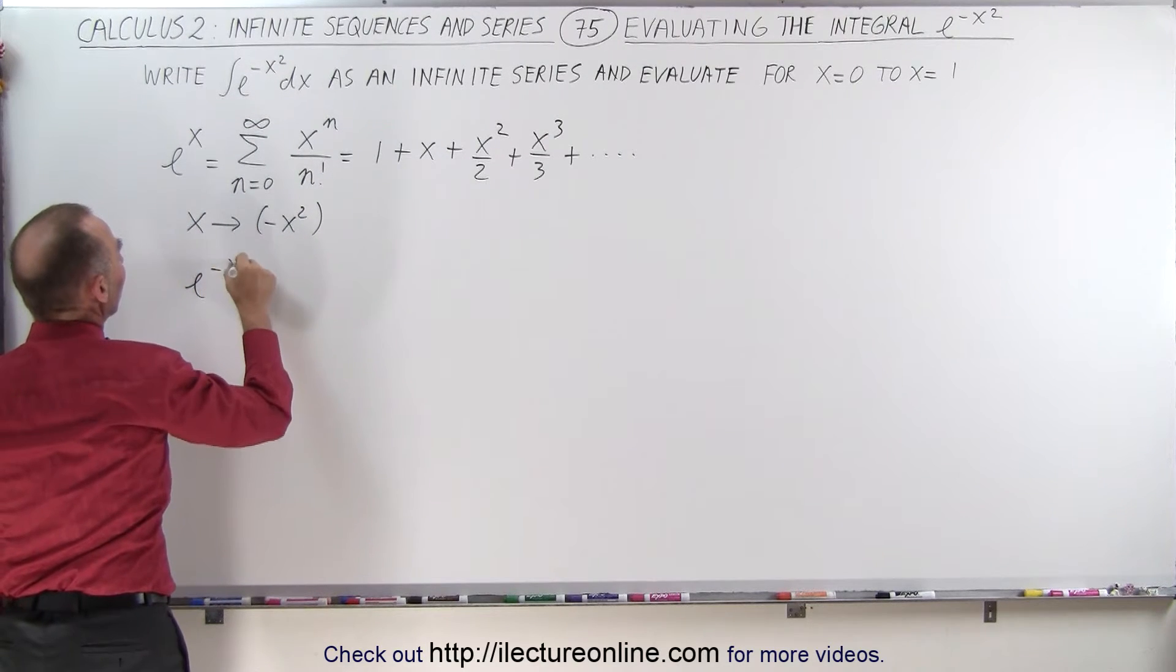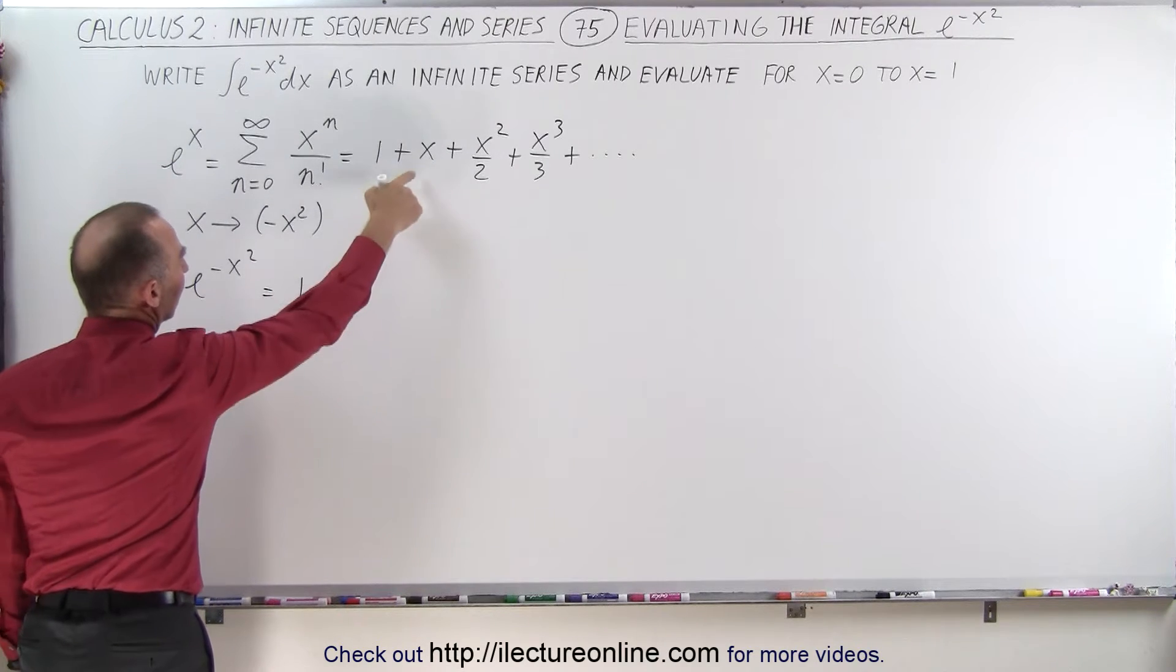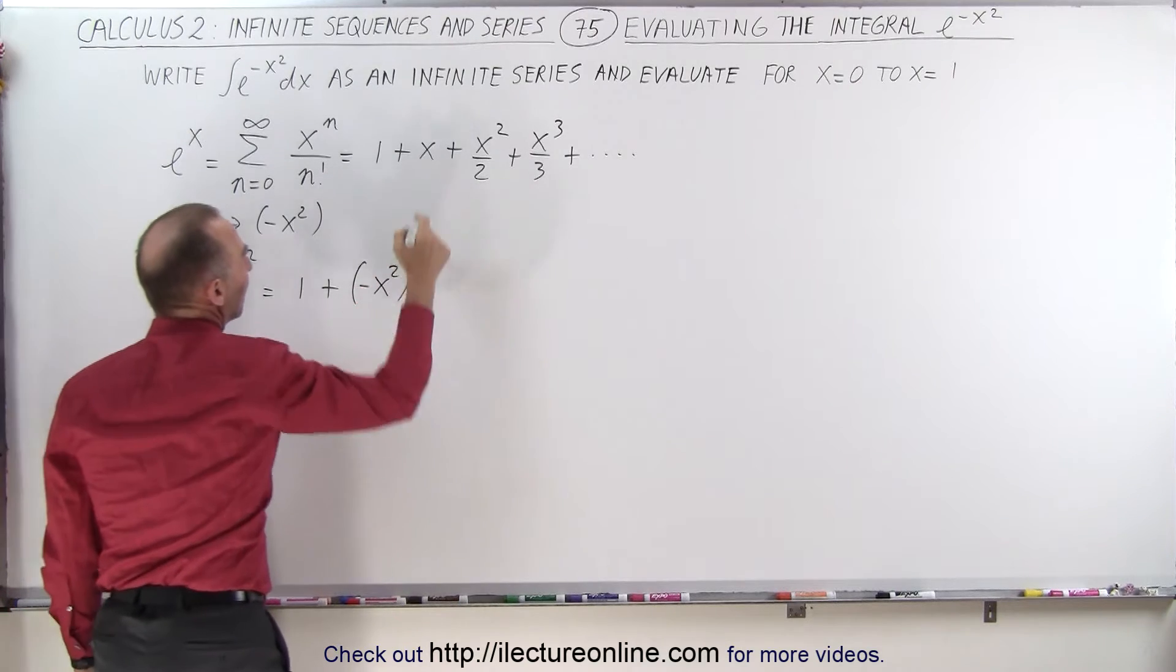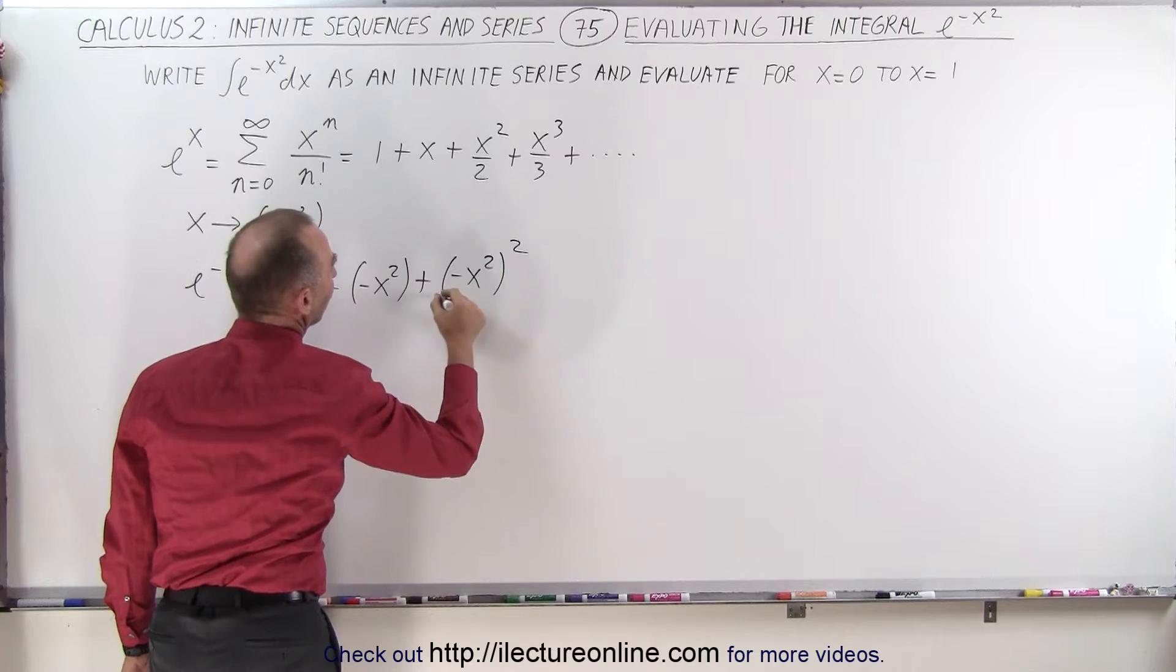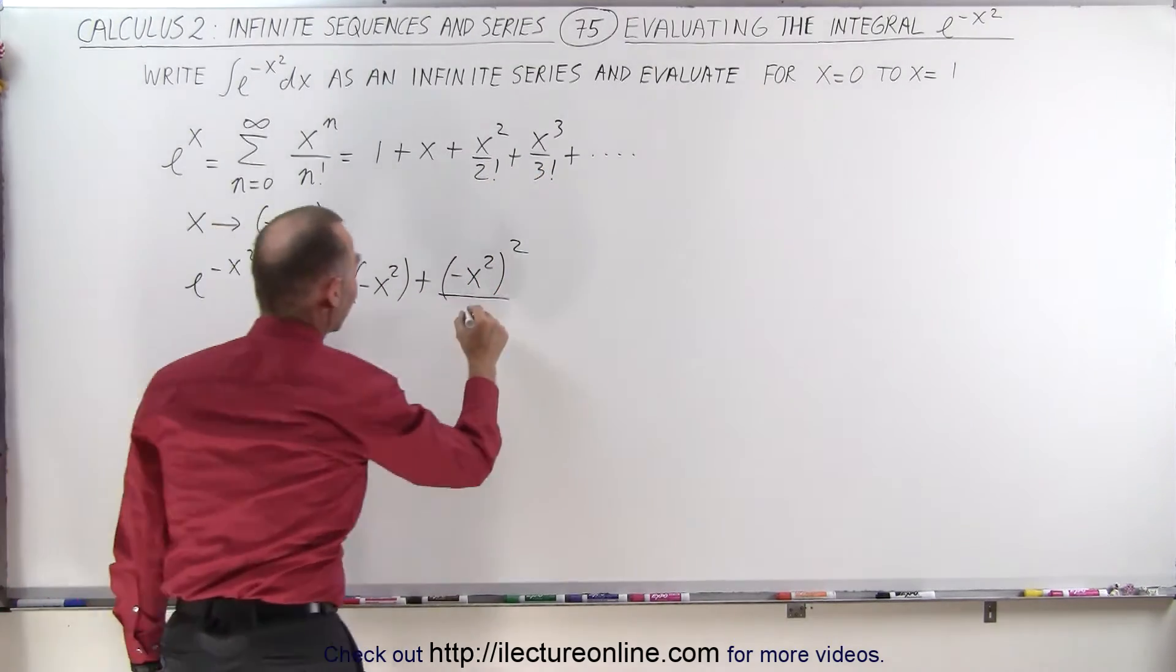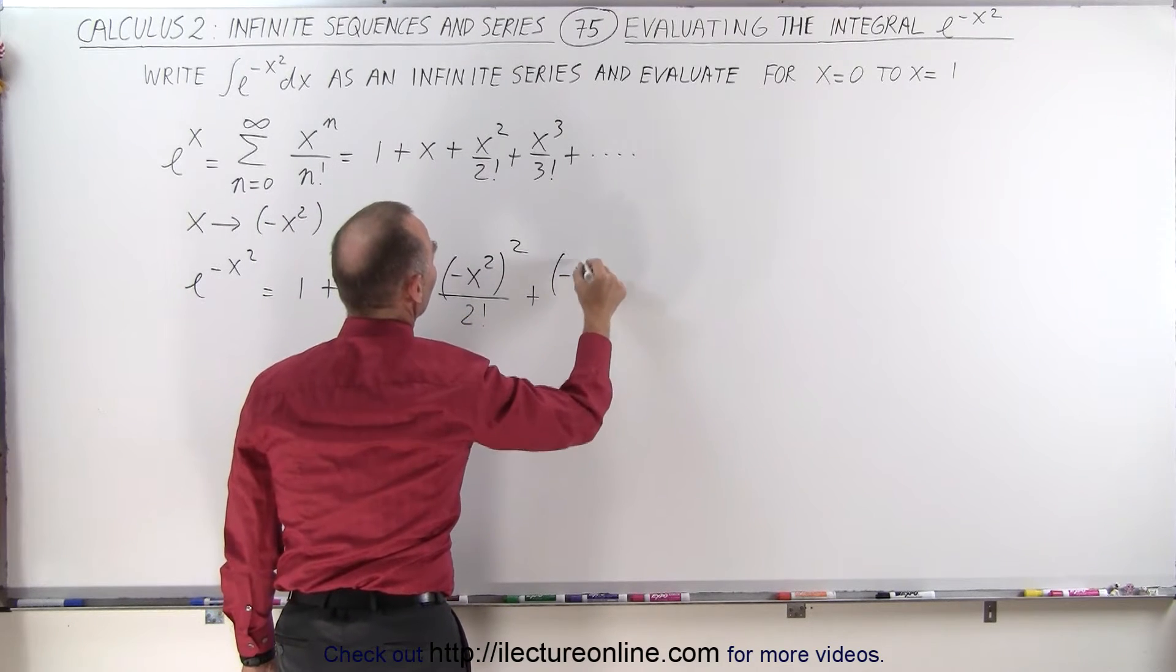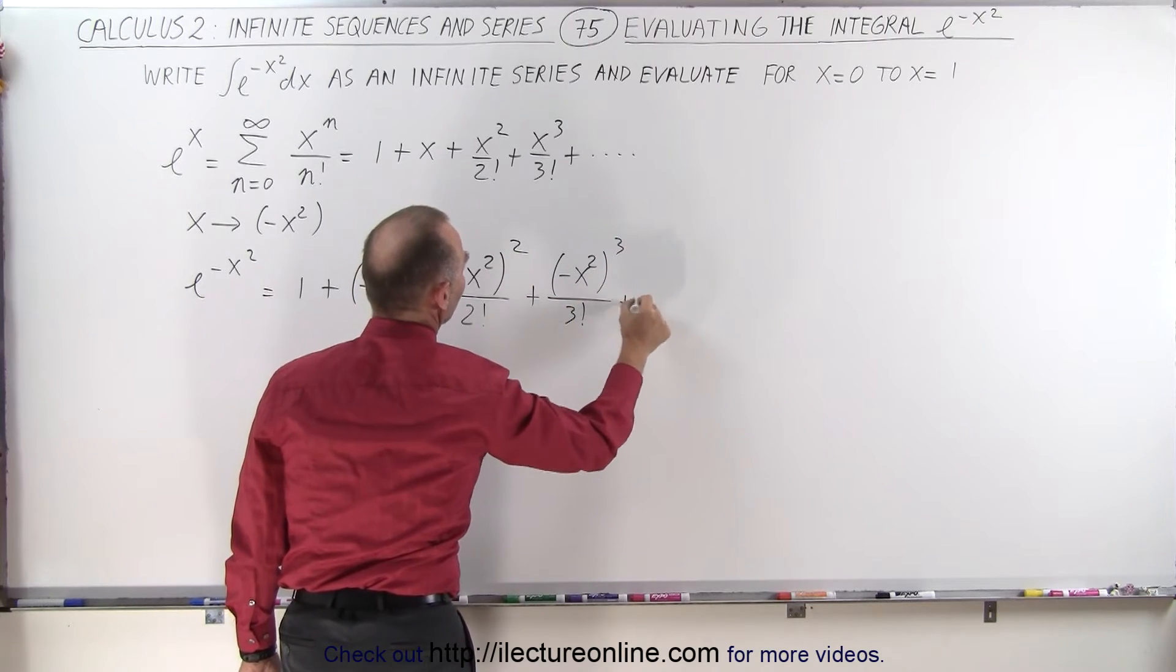So, e to the minus x squared can be written as 1 plus, instead of x, we write minus x squared. Instead of the x squared, we write minus x squared. We have to square that, divide it by, and of course, it would help if I add the factorials in the denominator, 2 factorial plus, this would be minus x squared to the third power divided by 3 factorial and so forth.